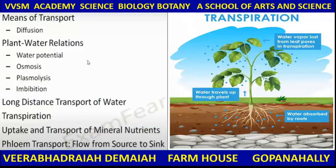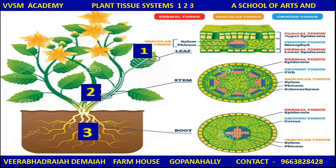Means of transport — that is by diffusion. Plant water relations: water potential, osmosis, plasmolysis, imbibition. Imbibition is very important. Long distance transport of water.